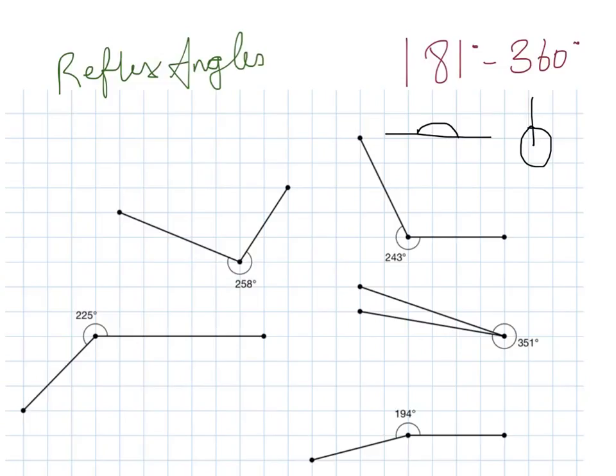And it goes through 243 degrees, 258 degrees, and the largest angle is 351 degrees, almost a whole circle. It looks a bit like Pac-Man, actually.